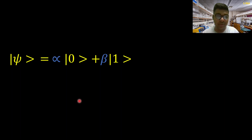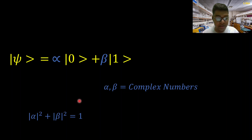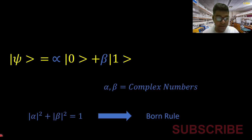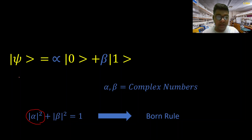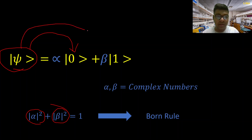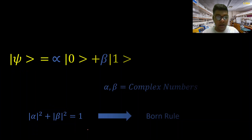This is how you represent quantum superposition mathematically. I have already explained that alpha and beta are complex numbers. Something new is this equation you can see here, commonly known as the Born rule. Alpha squared gives the probability of the quantum state psi collapsing into |0⟩ upon measurement, and similarly beta squared gives the probability of psi collapsing into |1⟩ upon measurement. Of course, these two probabilities add to one — that's the Born rule at its simplest.